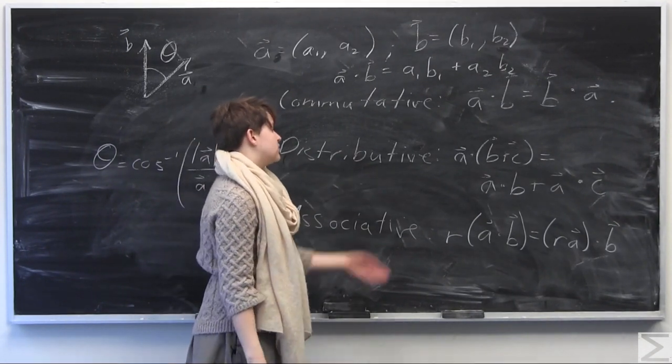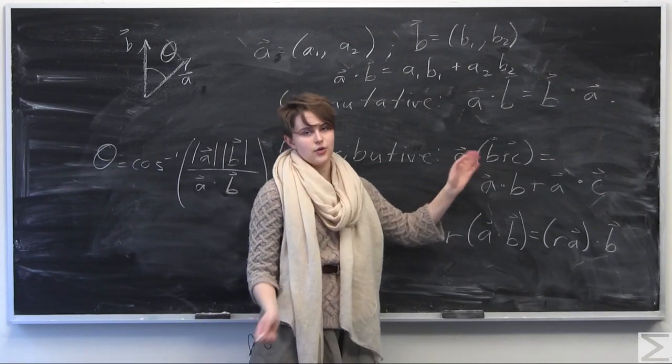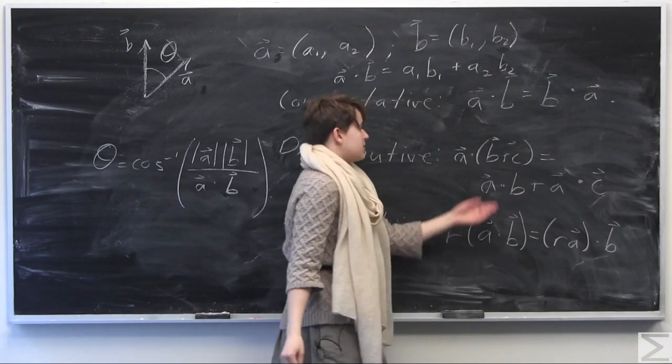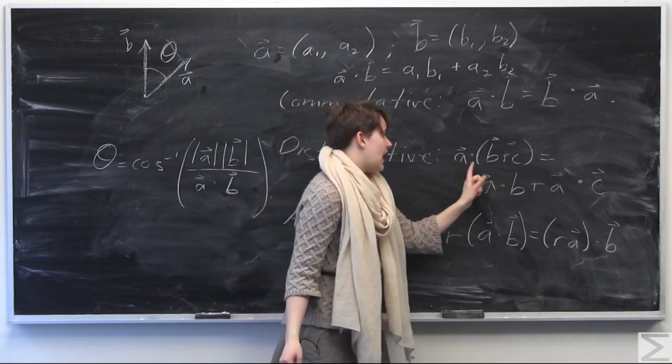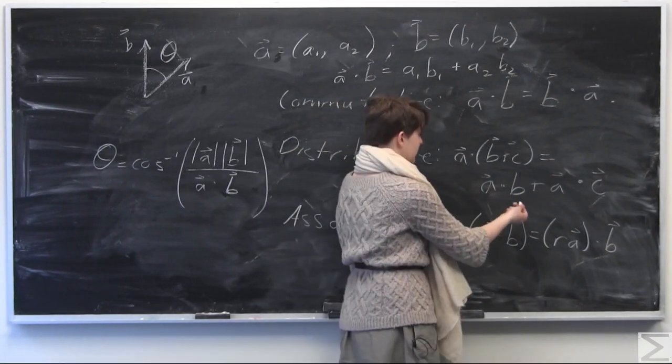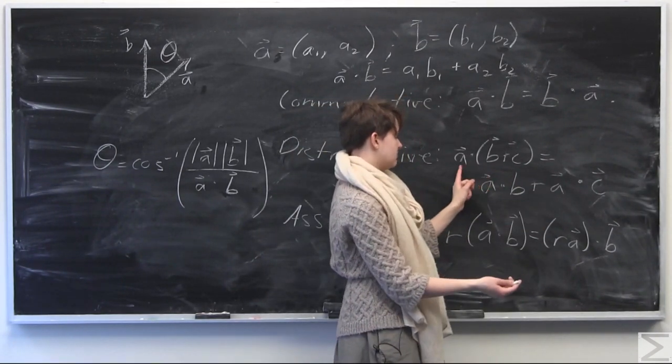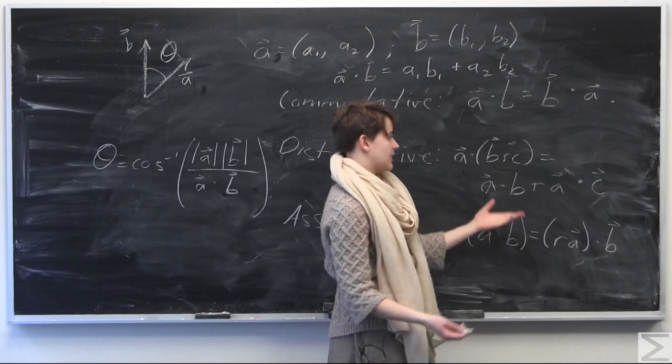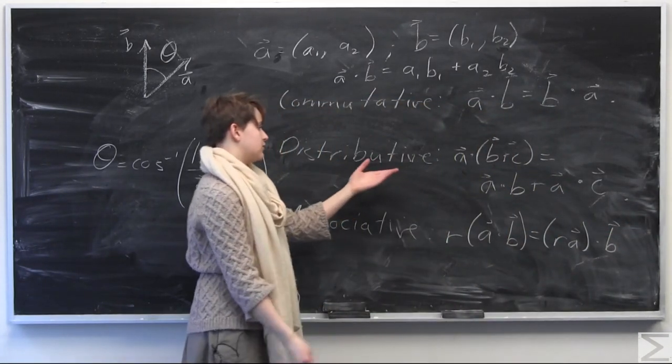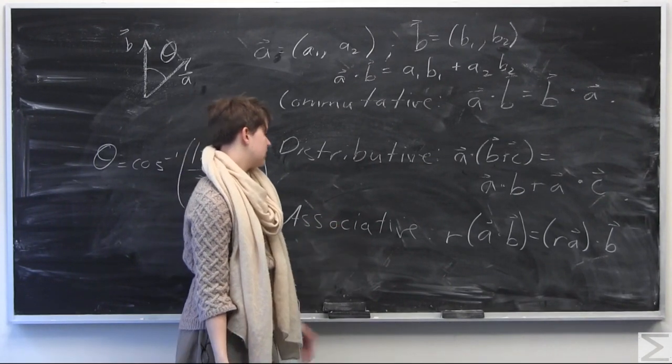Additionally, the dot product operator is distributive. So if you have A dot quantity B plus C, where B and C are two vectors here, this would just be equal to the same as kind of distributing the A over to each term inside of this parenthesis here. So it would be equal to A dot B plus A dot C. As you can see here, A dot B, A dot C. That's a very kind of handy use for the dot product, a handy property of the dot product there.